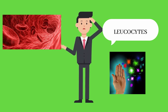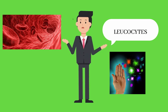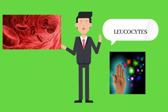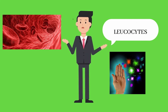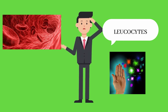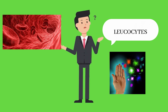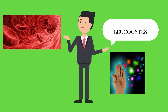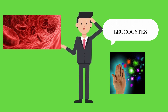White blood cells account for only about one percent of your blood, but their impact is big. They protect you against illness and disease. Think of white blood cells as your immunity cells — in a sense they are always at war, flowing through your bloodstream to fight viruses, bacteria, and other foreign invaders and cells that threaten your health.